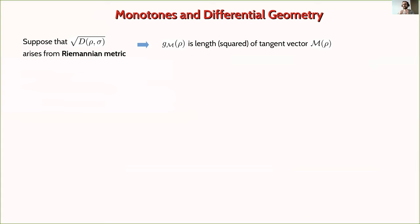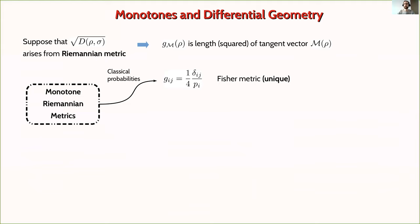Now assume the distinguishability measure is the square of a distance, and that the manifold of quantum states has a Riemannian metric for which this is the geodesic distance. Then what I called g(M) is just the squared length of the tangent vector at point ρ, where the tangent vector is given by M applied to ρ. So the question of finding these monotones reduces to finding all Riemannian metrics on the manifold of states that are monotonic under quantum operations.